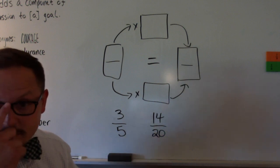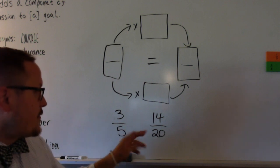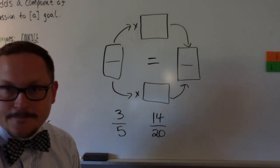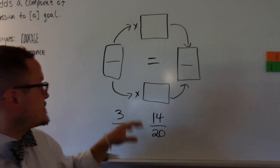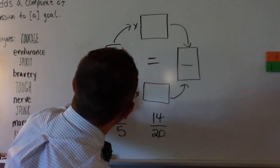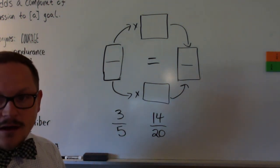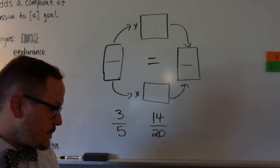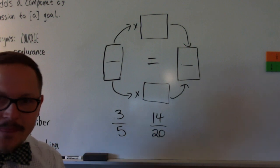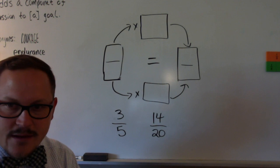Some people say they want the 14 pieces — that's a lot more pieces. And some say the fifths are larger-size pieces while the twentieths are tiny. We're going to refer back to this graphical tool to help us. I have to look at these two fractions and say: okay, what do I know about the numbers 3/5 and 14/20?